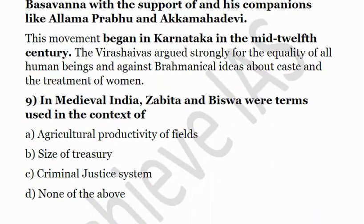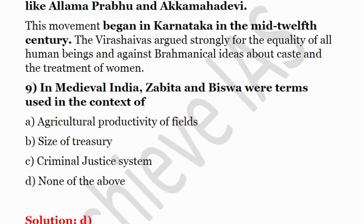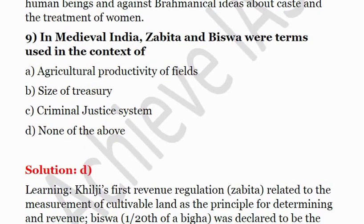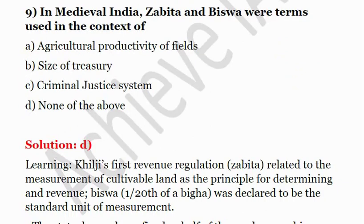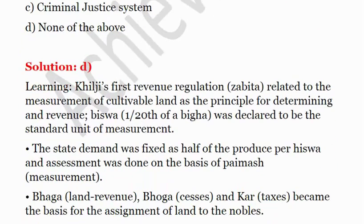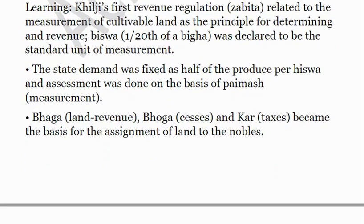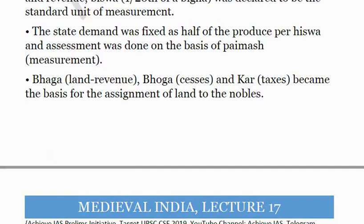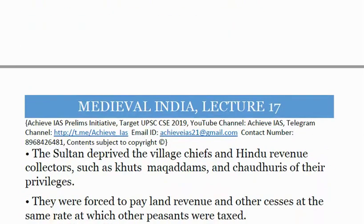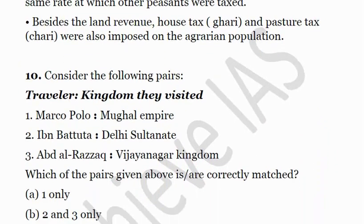Ninth question: In medieval India, Zabita and Biswa were terms used in the context of — A) agricultural productivity of fields, B) size of treasury, C) criminal justice system, D) none of the above. The correct answer is D — none of the above. Zabita and Biswa were terms used in the context of measurement of land. Alauddin Khilji's first regulation — Zabita — related to measurement of cultivable land as the principle for determining revenue, and Biswa was declared the standard unit of measurement. The state demand was fixed as half of the produce per Biswa.